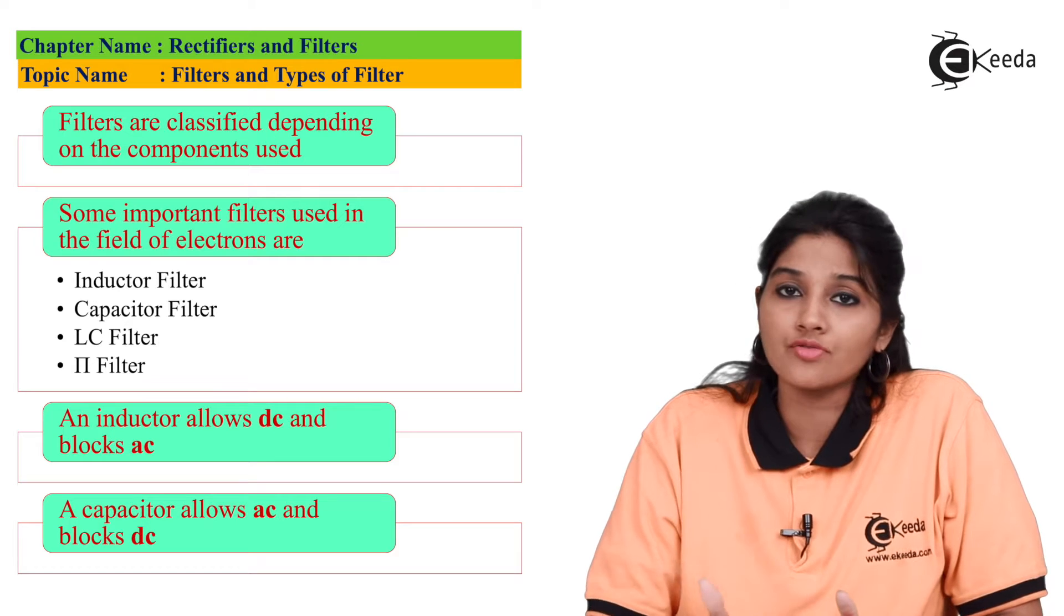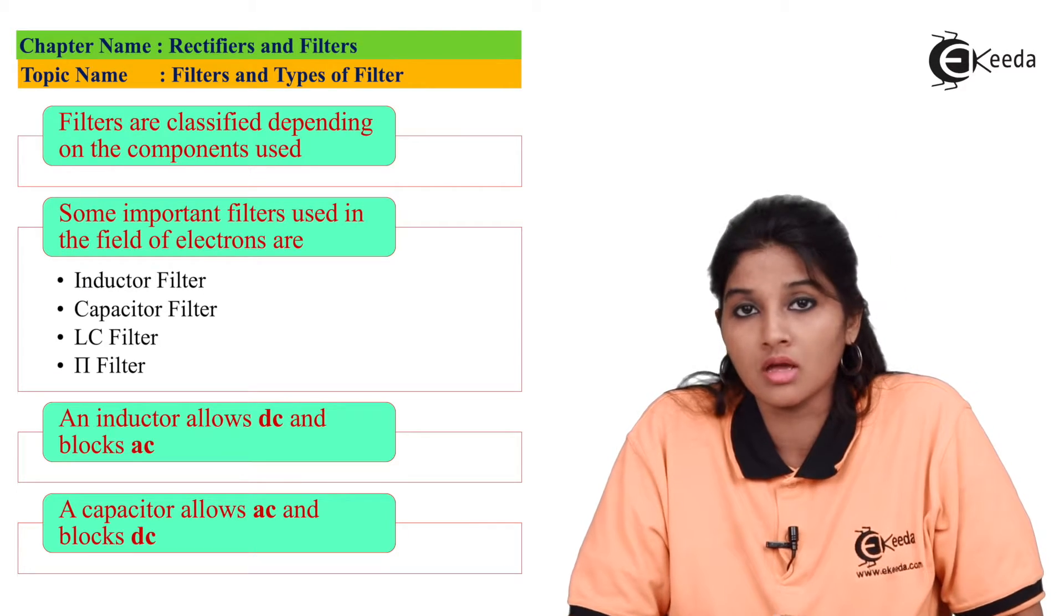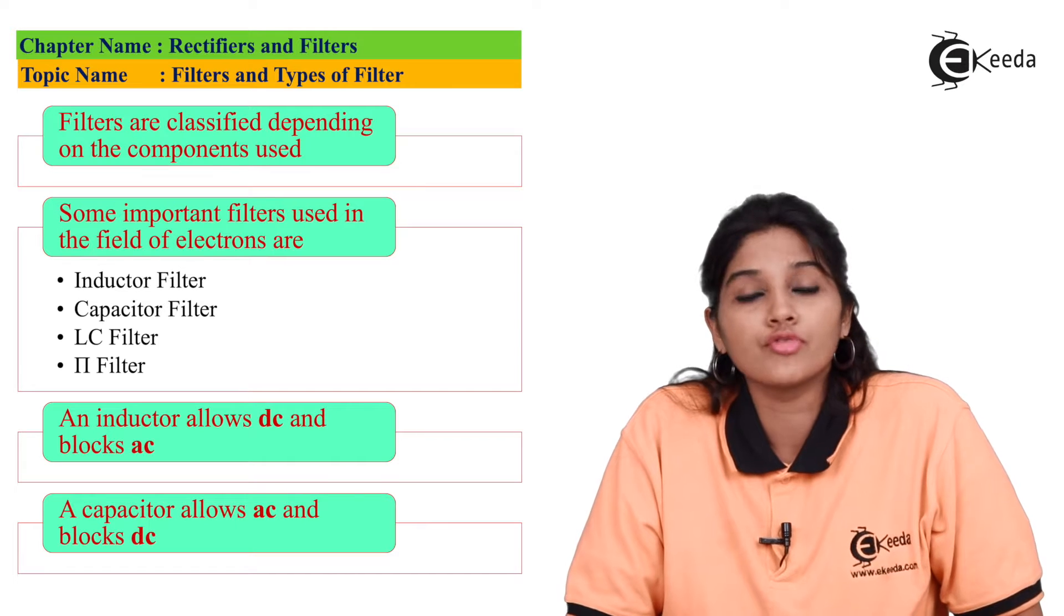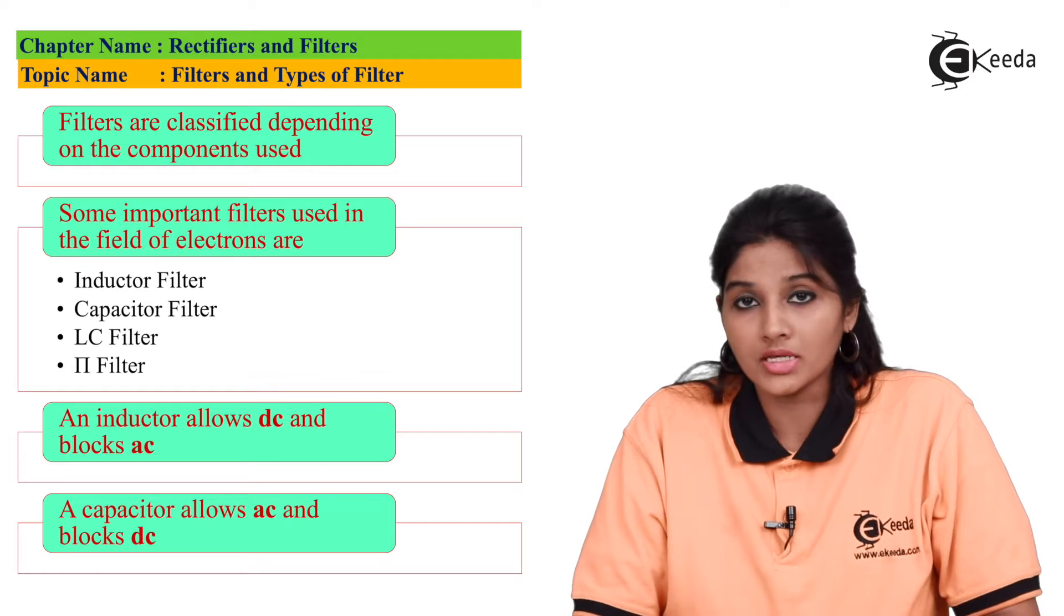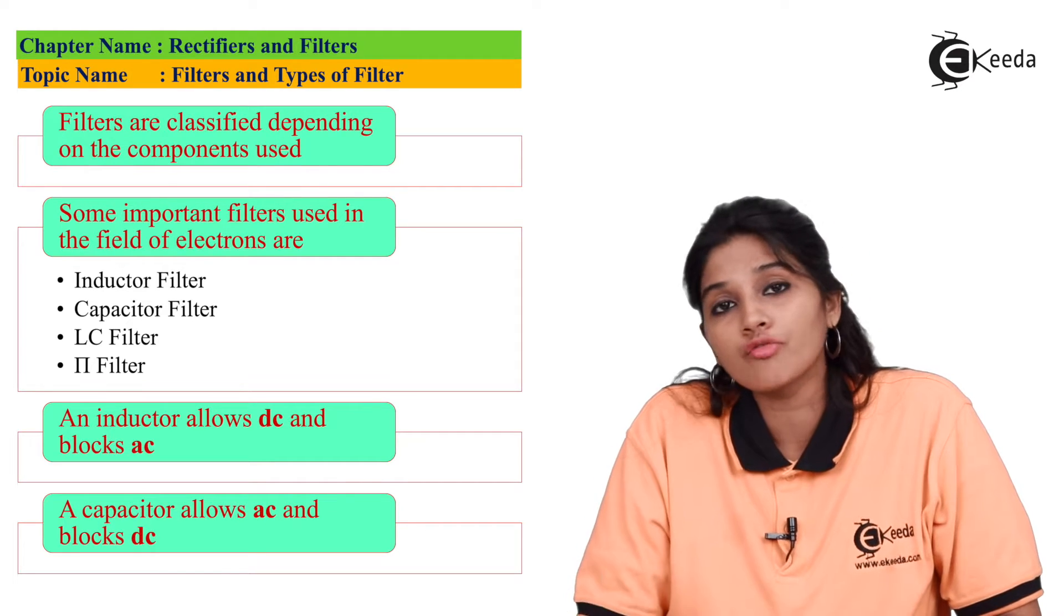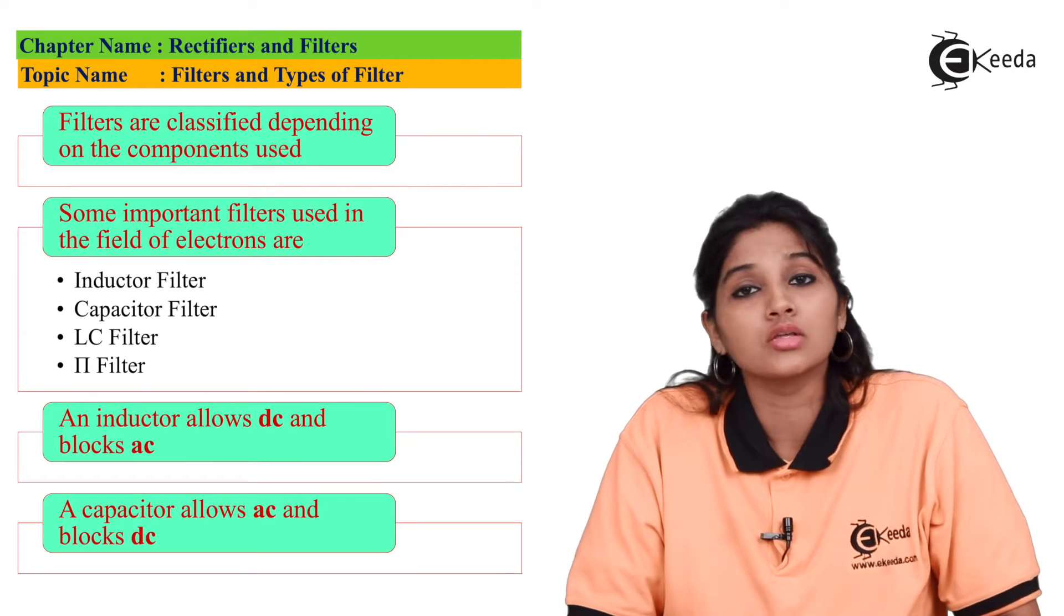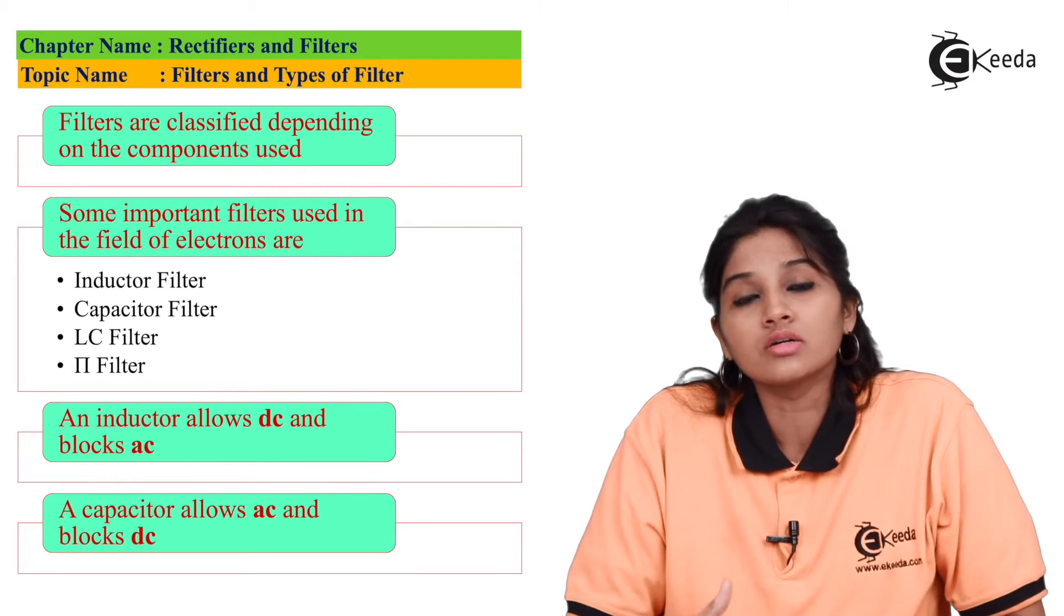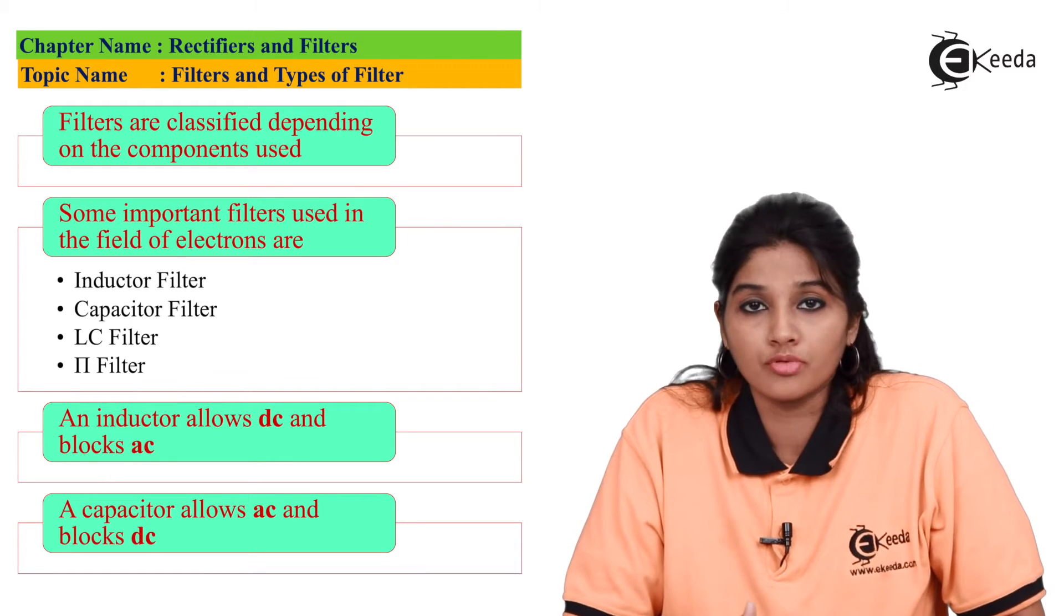The filters are classified on the basis of the components used for implementing the filter circuit. The few important types of filters are inductor filter which is also called as choke filter, then capacitor filter which is also called as shunt filter, then a combination of inductor and capacitor filter that is LC filter, and next one is pi filter. So these filters can be used at the output of rectifier in order to get pure DC signal as output.